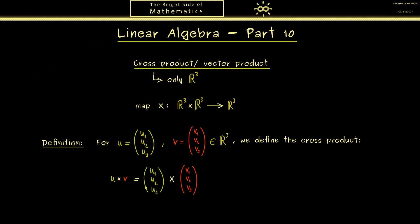By using the components this would look like this. This represents a new vector we can calculate using the components. It's easy to remember when you start in the middle and go one step down. This means first we have u2 times v3. Then we mirror this line and go from u3 to v2, and the important thing is we add a minus sign. So in summary we subtract u3 times v2, giving us the first component of the cross product.